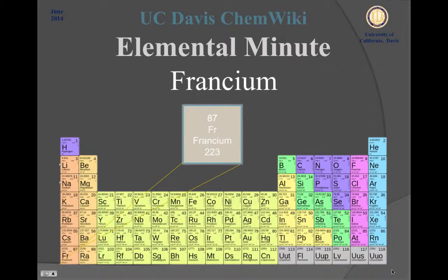Francium is the last of the alkali metals with an atomic number of 87. It is the last found element in nature with small traces buried in uranium and thorium ores.